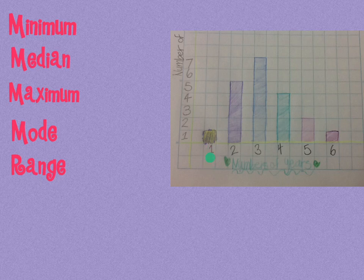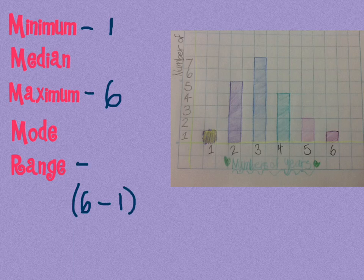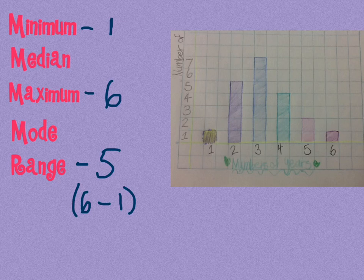And here we can see the minimum is one. And the maximum is six. And the range is going to be six minus one, which hopefully you know is five. For the mode here, which one happens the most? Three years is the most.